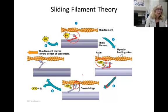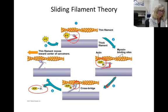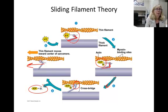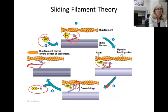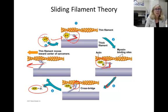When ADP and Pi are released, this causes the myosin to pull on the actin and contract the muscle. The system will stay in this configuration until another ATP molecule is available. When ATP binds, the head releases and the process can repeat, as long as ATP and calcium are both available and the muscle still has room to contract.